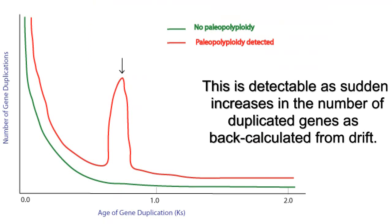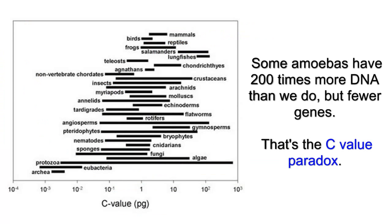We can see the evidence for these paleopolyploidies by looking at very closely related genes within a single genome. By back-calculating drift rates, we see that many gene families emerged all at once, suggesting that some single event produced copies of whole chromosomes or whole genomes. This also helps to explain why some organisms, like the pufferfish and salamander, have so much DNA but so few genes. This idea is called the C-value paradox. The C-value is the number of DNA bases an organism has.